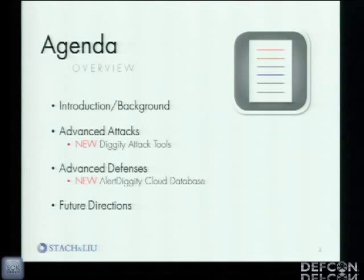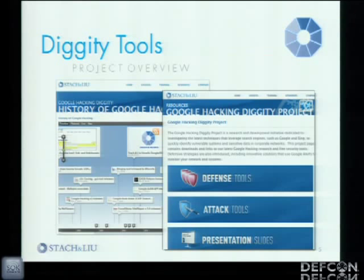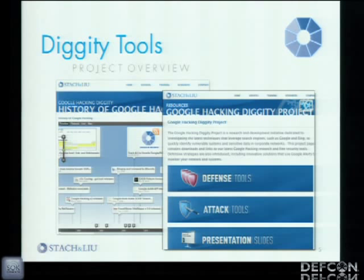We're going to quickly show a list of tools we've done in the past, then move on to entirely new tools on version 3.0, uploaded to our website just an hour ago. Everything we're showing is free on our website, stacklue.com. Our project is the Google Hacking Diggity project — we release free search engine hacking tools broken up into attack tools and defensive tools. Our defensive tools primarily rely on Google alerts and other alerting and RSS capabilities to feed us real-time updates from Google, Bing, Shodan, and other search engines.